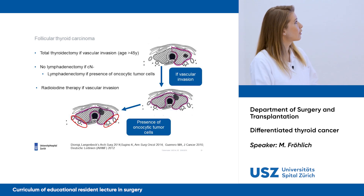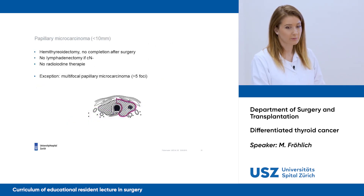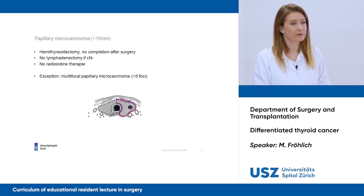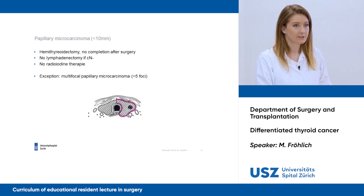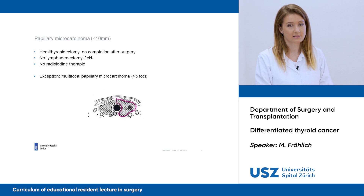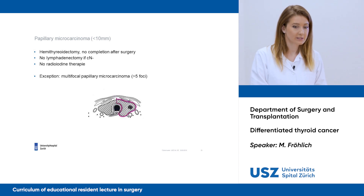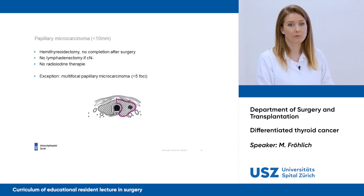Summarized: we may perform a hemithyroidectomy and detect a vascular invasion, and then we have to complete the surgery. If we also have oncocytic tumor cells in the histopathology, we should do a lymphadenectomy. If we have a papillary carcinoma smaller than one centimeter, we should perform a hemithyroidectomy and do not need to complete this after surgery. There is no evidence for lymphadenectomy without sonographic suspicion of lymph node metastasis, and no radioiodine therapy is necessary. Exception is a multifocal papillary carcinoma with more than five foci.